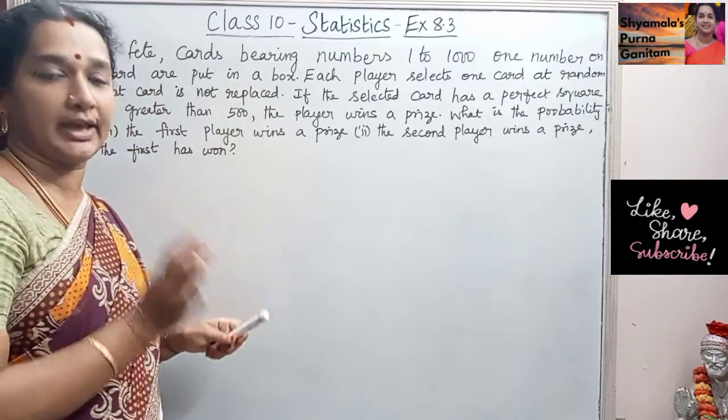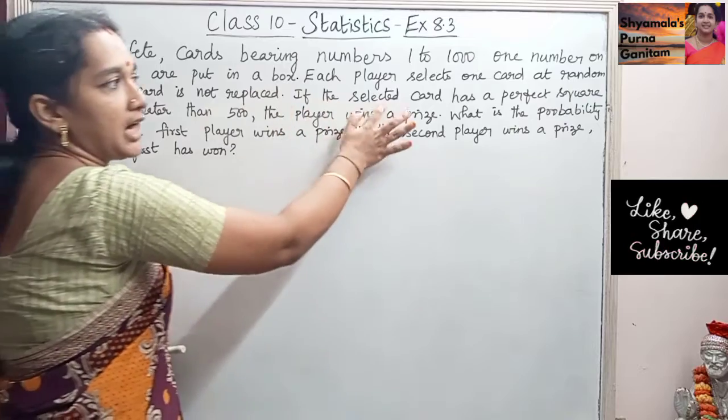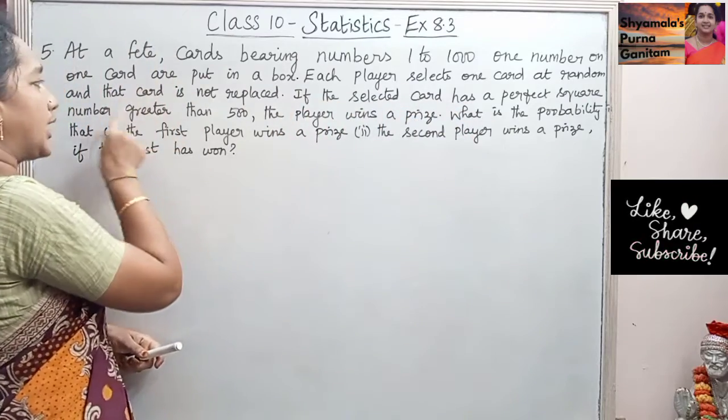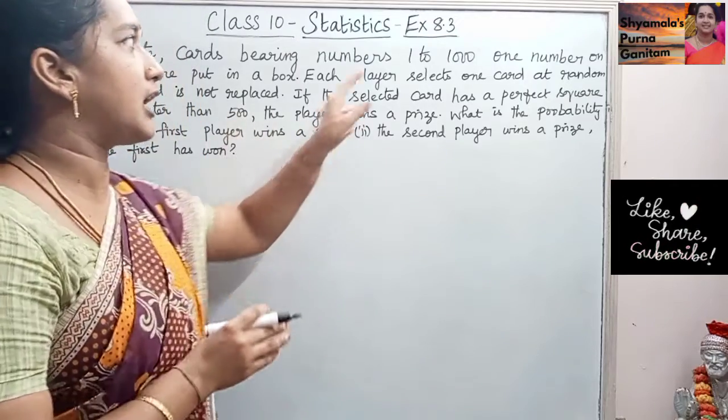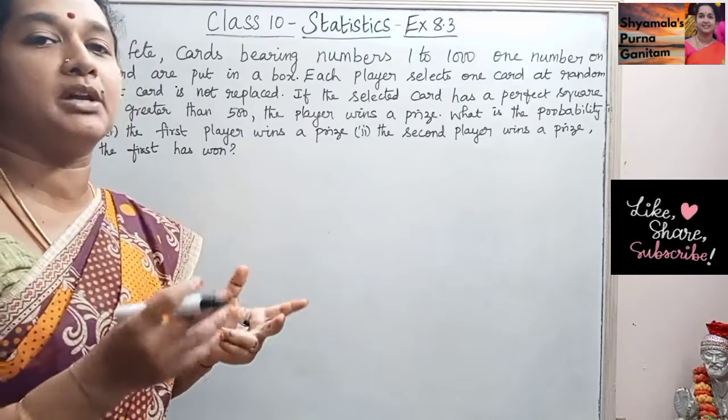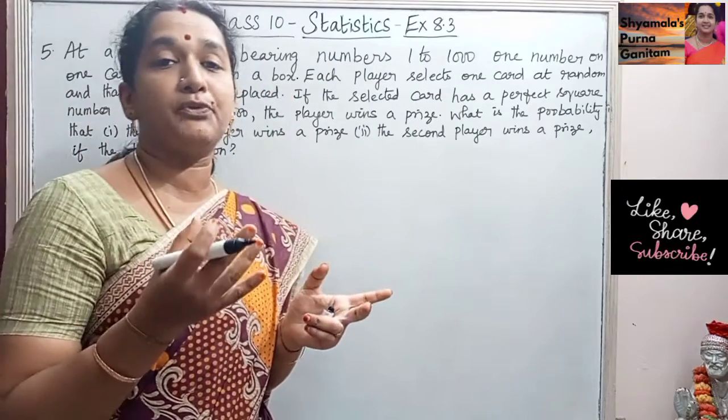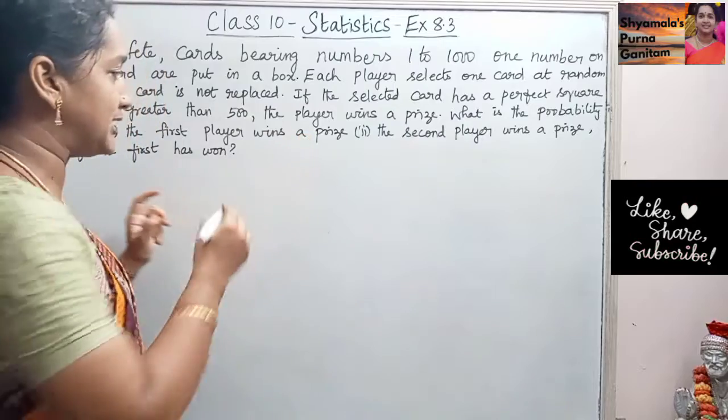So first we need to find the perfect square numbers. For that, the condition is given that if the card selected has a perfect square number greater than 500. We have cards from 1 to 1000, so from which number will we get a perfect square number greater than 500? That we will see first.